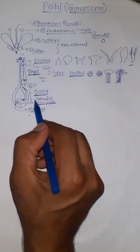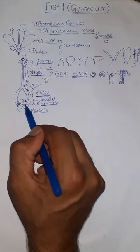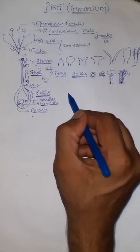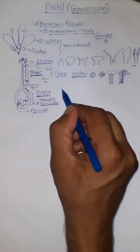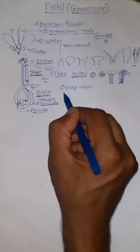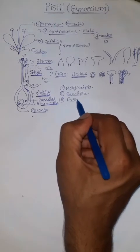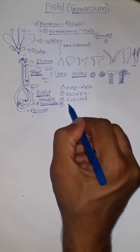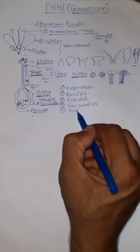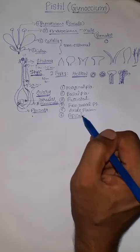We will discuss more about the ovule in the next video. Based on the location of the placenta, we have different types of placentations in angiosperms. There are usually five or six types: marginal placentation, basal placentation, parietal placentation, free central placentation, axial placentation, and even apical placentation, which is rarely found.